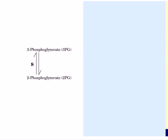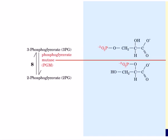The eighth reaction is the conversion of 3-phosphoglycerate to 2-phosphoglycerate. The reaction is catalyzed by phosphoglycerate mutase. 3-phosphoglycerate is phosphorylated by a phosphohistidine residue of the enzyme, generating 2,3-bisphosphoglycerate, which then phosphorylates to yield 2-phosphoglycerate and regenerates the phosphohistidine enzyme.